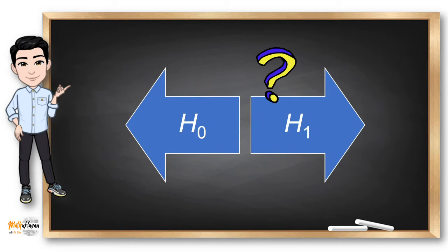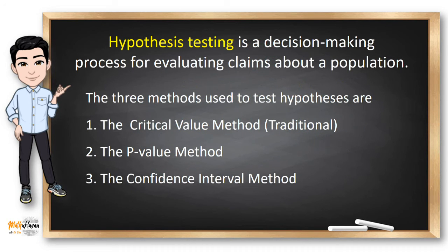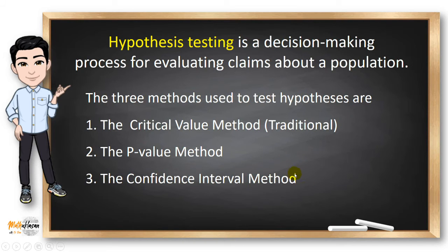In a study, only one of these two hypotheses is correct. That is why we do hypothesis testing. This is a decision-making process for evaluating claims about a population. The three methods used to test hypotheses are the critical value method, the p-value method, and the confidence interval method. In this video, we'll only discuss the critical value and the p-value method; the confidence interval method is reserved for another video.